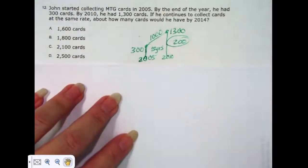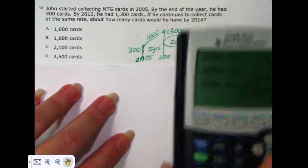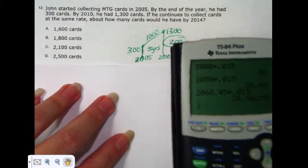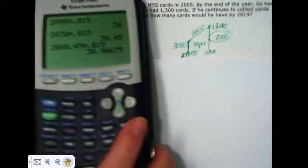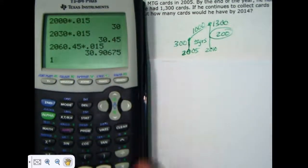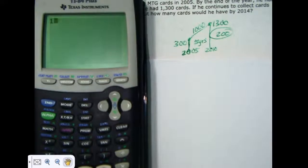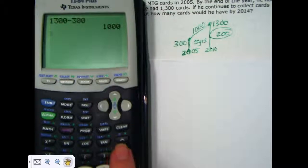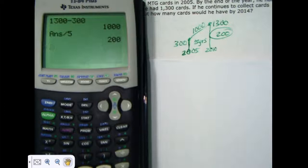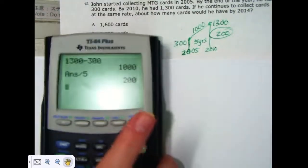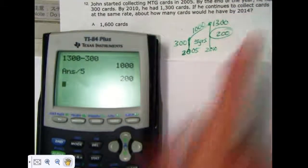200 per year because his collection increased from 300 to 1,300. So it increased by 1,000. He added 1,000 cards to his collection over that five years. And because it took him five years to do it, he increased 200 every year. Now the question is saying how many cards would he have by 2014?